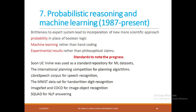Coming to the decade of probabilistic reasoning and machine learning, 1987 to present — brittleness of expert systems led to new, more scientific approaches. People started using probability instead of Boolean logic, machine learning instead of hand-coding, and experimental results rather than philosophical claims. UC Irvine became a standard repository for machine learning datasets. The LibriSpeech corpus was used for speech recognition, MNIST for digit recognition, and ImageNet and COCO for image object recognition and NLP tasks.